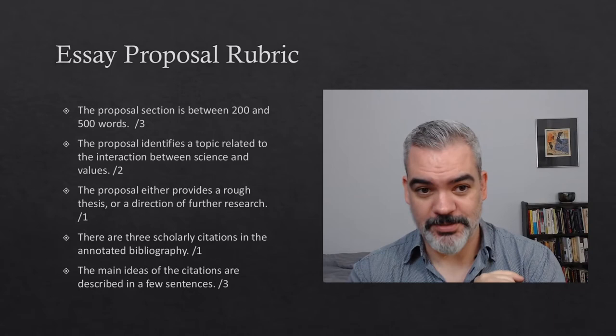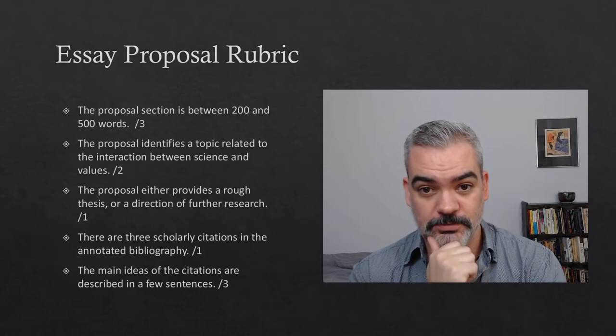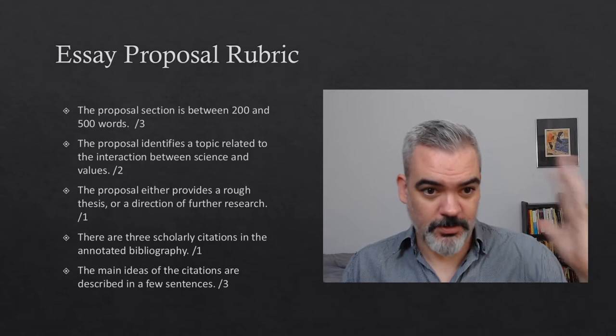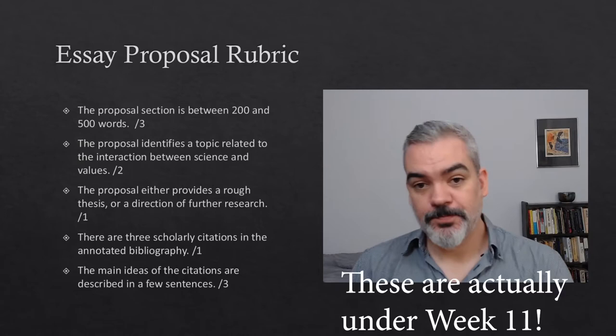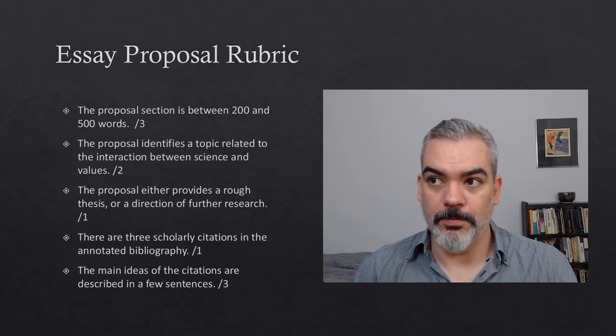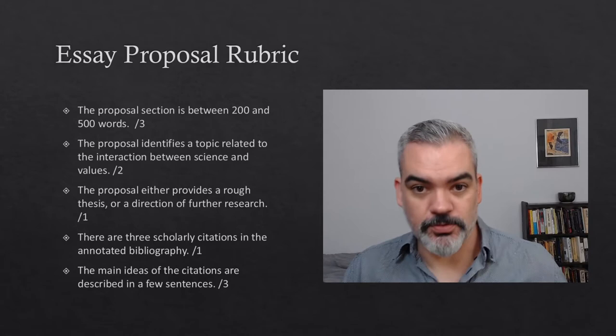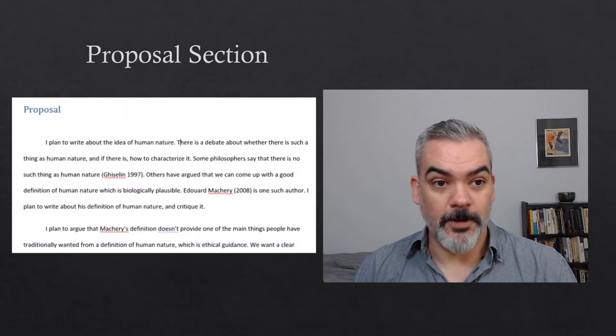There is one mark for having three scholarly citations in the annotated bibliography — they do need to be scholarly, so don't cite random websites, blogs, or somebody's Twitter feed. Then there are three marks for the main ideas of the citations being described in a few sentences. Under Week 10 on Quercus, I will post both a more detailed version of this rubric and also an example I've worked up of an essay proposal, so you'll have something to look at and a rough idea of what we're looking for.